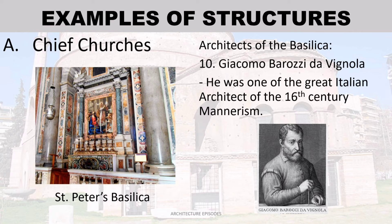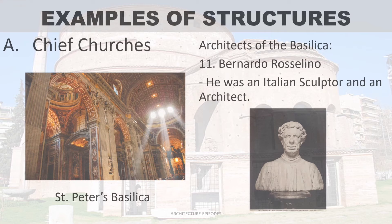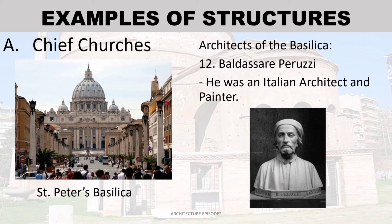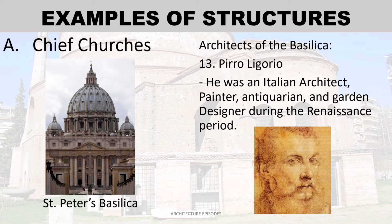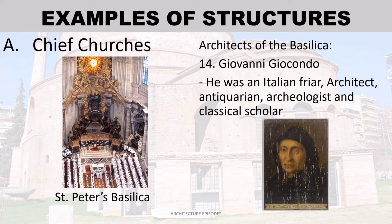Giacomo Barozzi da Vignola — one of the great Italian architects of 16th-century Mannerism. Bernardo Rossellino — an Italian sculptor and architect. Baldassare Peruzzi — an Italian architect and painter, antiquarian, and garden designer during the Renaissance period. Giovanni Giocondo — an Italian friar, architect, antiquarian, archaeologist, and classical scholar.